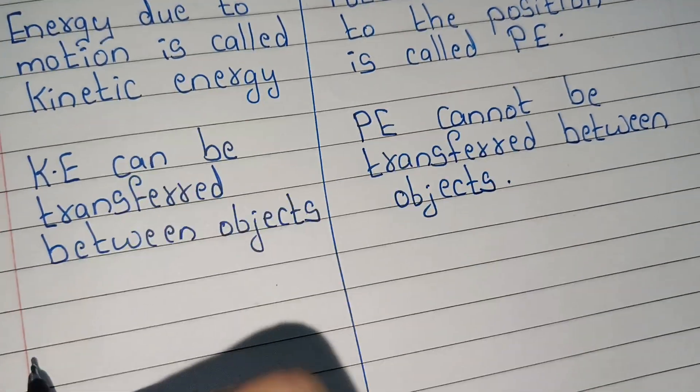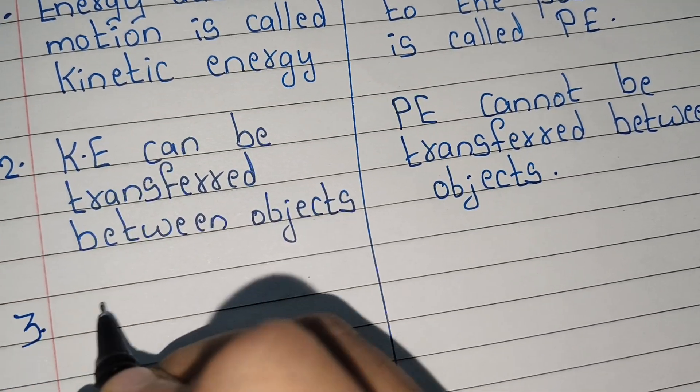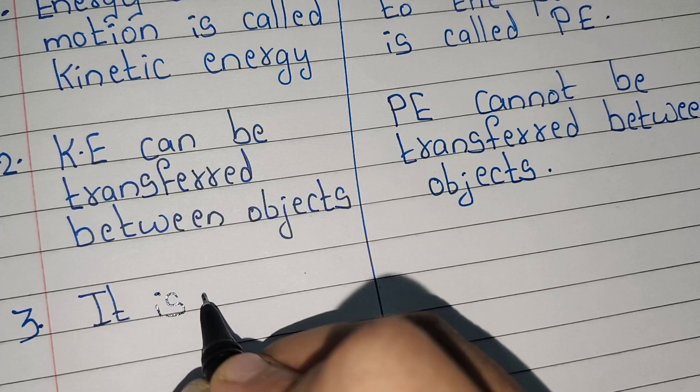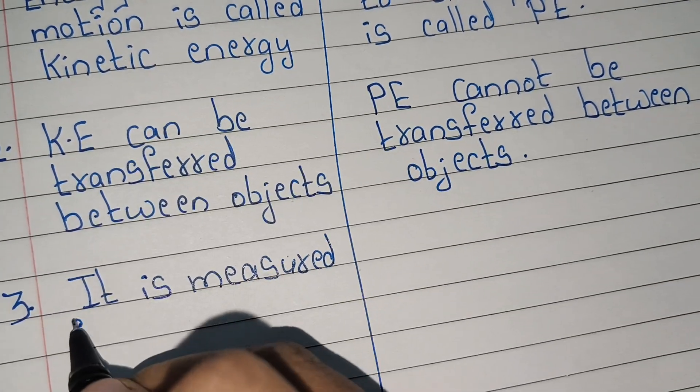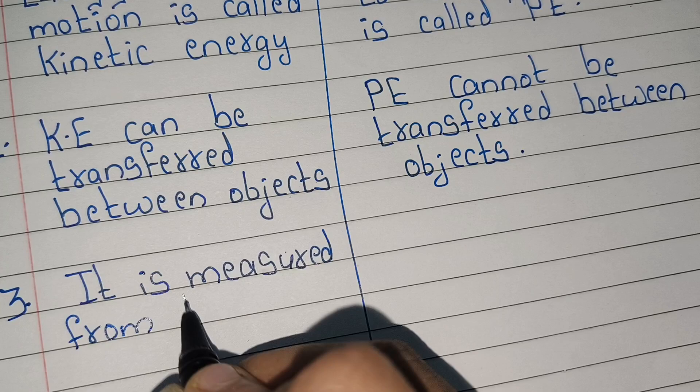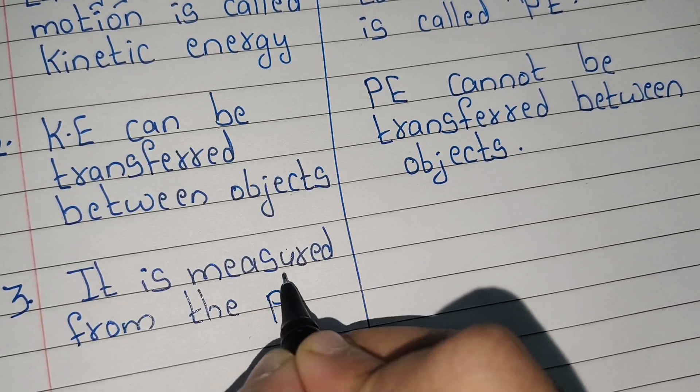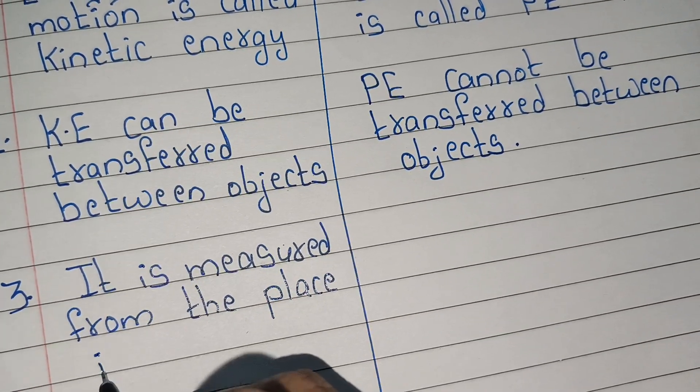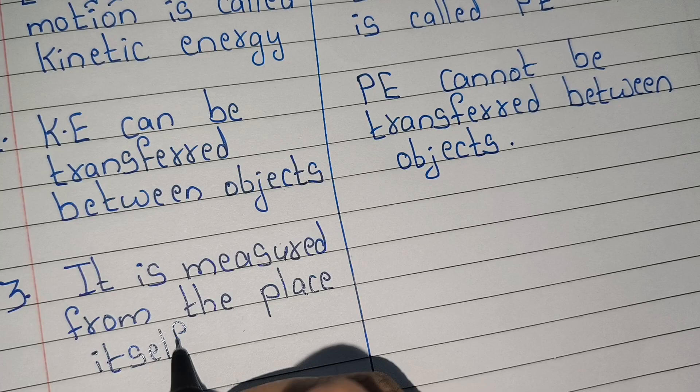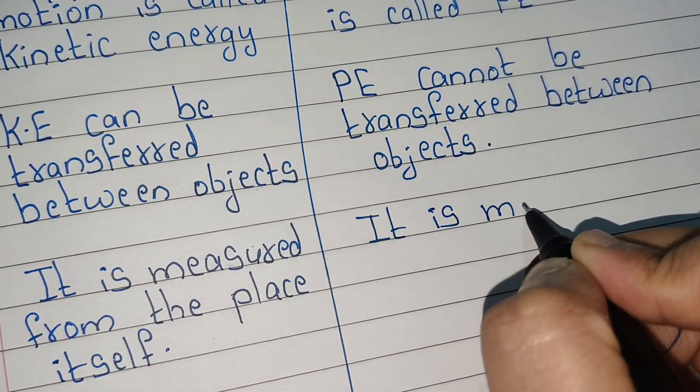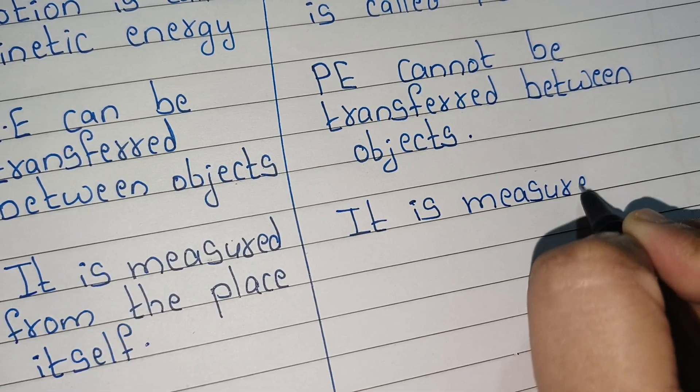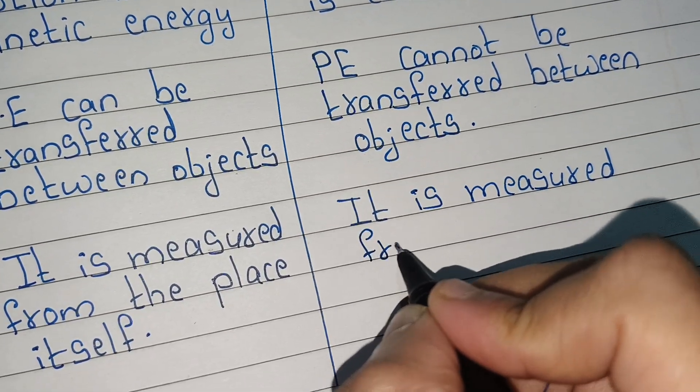Third point: kinetic energy is measured from the place itself. Potential energy is measured from the bottom.